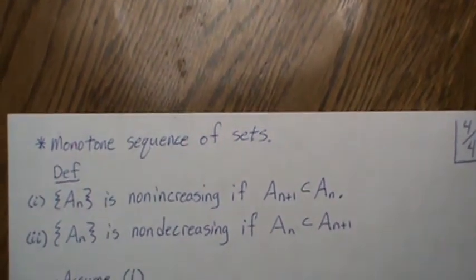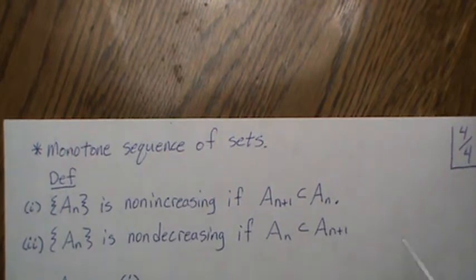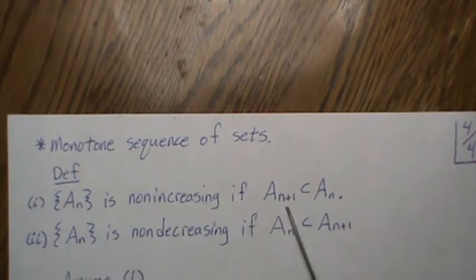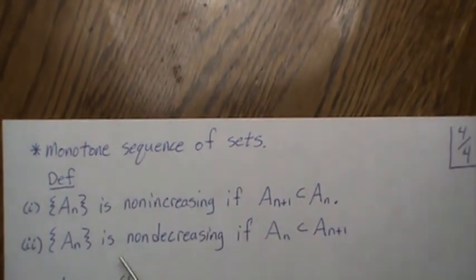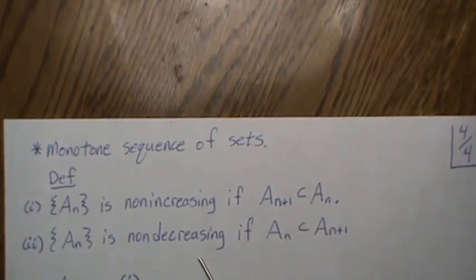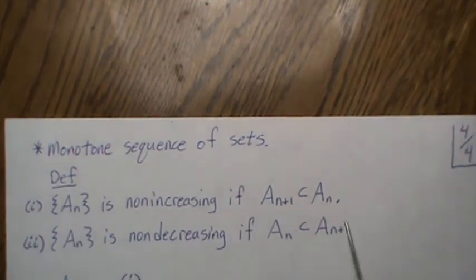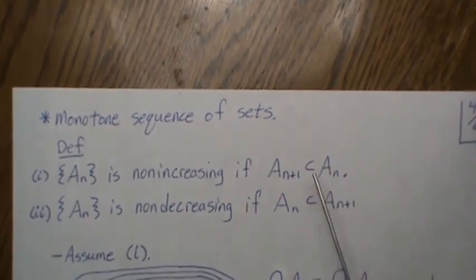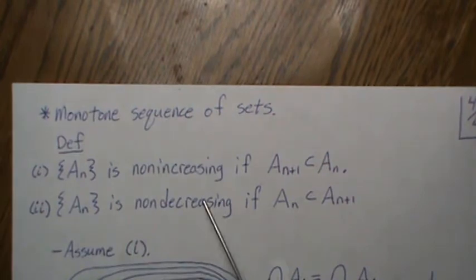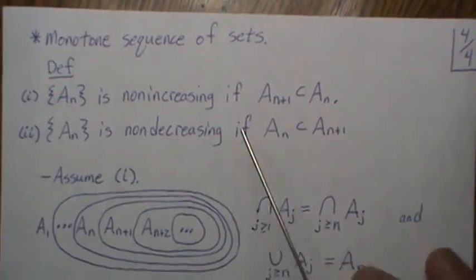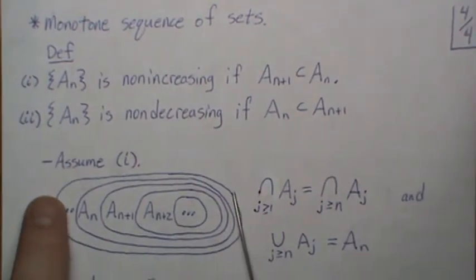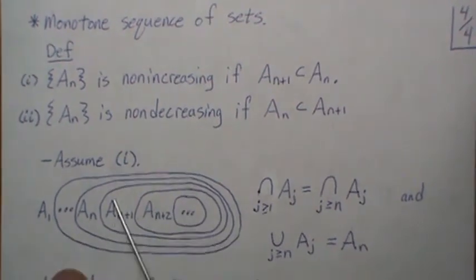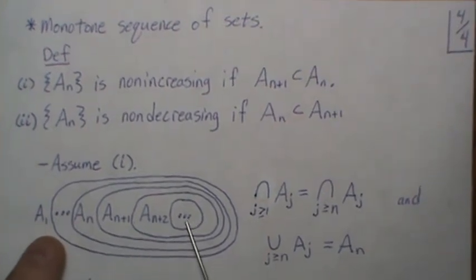Now one more topic: monotone sequences of sets, which is a fairly large topic. A_N is non-increasing if the next set is a subset of the previous set — so it's potentially getting smaller. A_N is non-decreasing if A_N is a subset of the next one. In the non-increasing case, A_1 is the largest, then A_2, A_3, and A_N, each getting a little smaller.